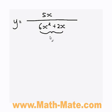Now what you can do is call each bit of the fraction by a variable name. So I'm going to call the top u, so u is going to represent 5x and the bottom is going to be called v.